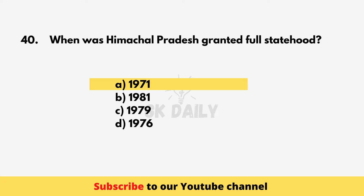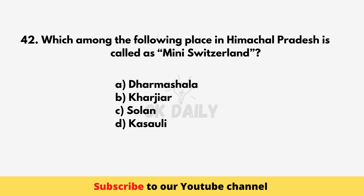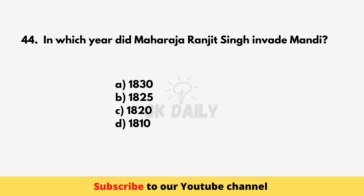Who was the first governor of Himachal Pradesh? S. Chakravarti. Which place in Himachal Pradesh is called Mini Switzerland? Khajjiar. What is the Vedic name of River Chenab? Askini. In which year did Maharaja Ranjit Singh invade Mandi? 1830.